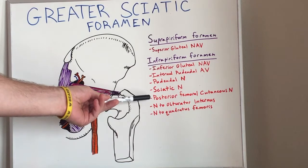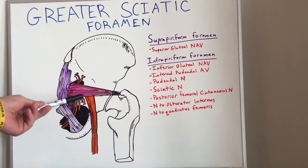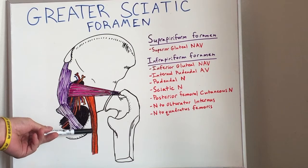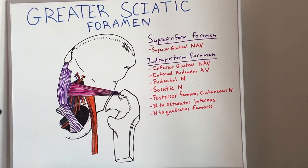We have the posterior femoral cutaneous nerve, which runs along with the sciatic nerve, and that innervates the cutaneous or skin sensation on the back of the leg.